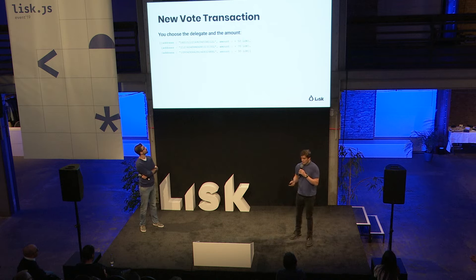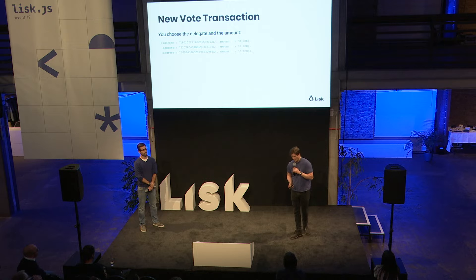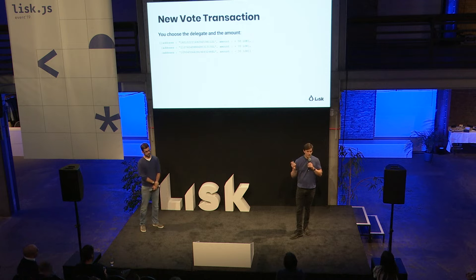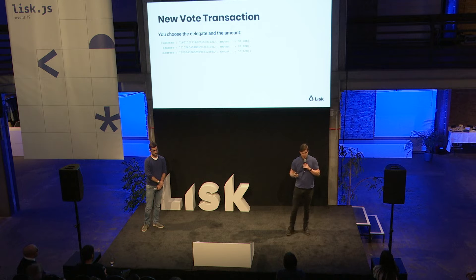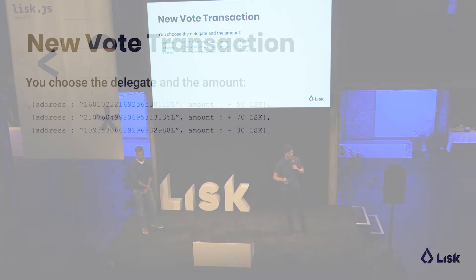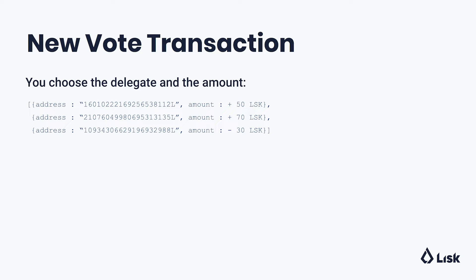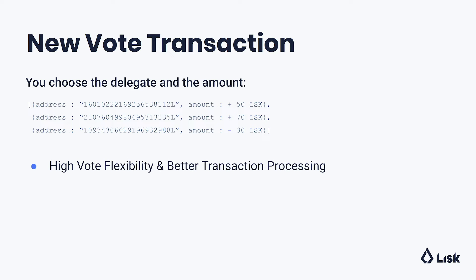We believe that this will allow users to vote according to their needs and preferences. This is also good for the network because currently every transaction basically needs to ask the network to recompute every vote. With the new system, votes only have to be computed with the vote transaction. We believe this makes transaction processing roughly 100 times more efficient, achieving the goals of flexibility and transaction efficiency.